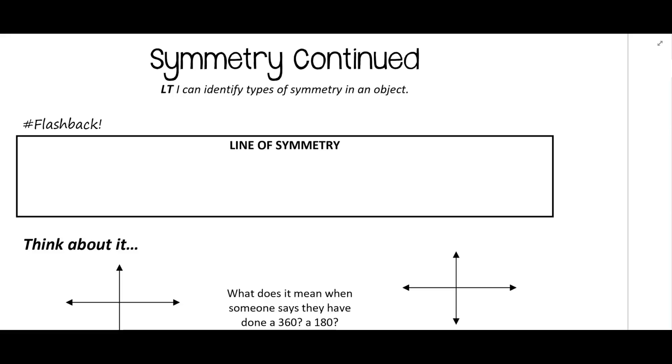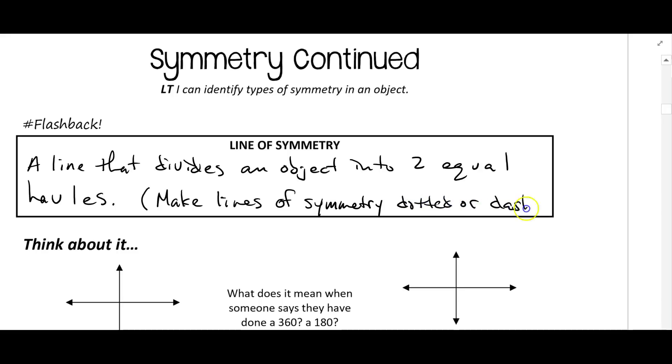So if you recall, line of symmetry is a line that divides an object into two equal halves. So an object can have more than one line of symmetry. Remember if it does just have one line of symmetry we would say that the figure has bilateral symmetry. And then normally we will make lines of symmetry dotted or dashed, and that way we know that it wasn't really part of the original figure.